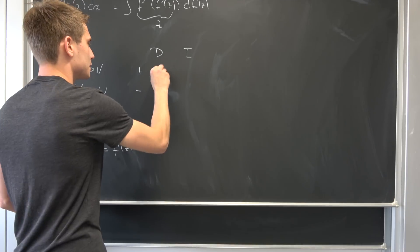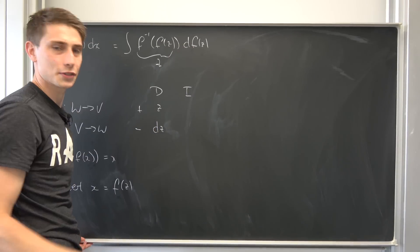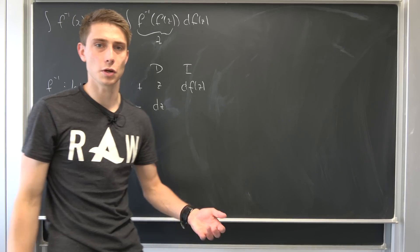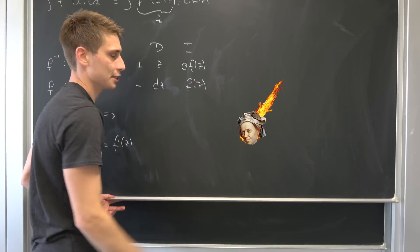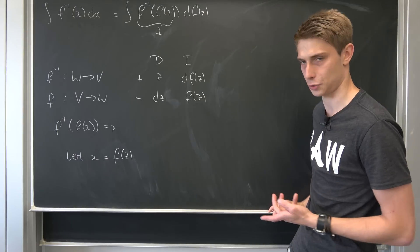So why not differentiate z right here? We end up with dz. And why not integrate our d f of z? So it's just like integrating dx, you are going to end up with an x in the end. So we have f of z right here. Integrating a differential just leaves you with the argument of the differential.